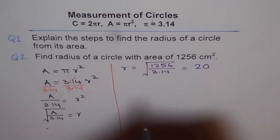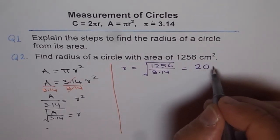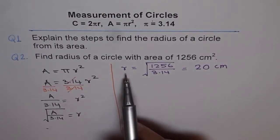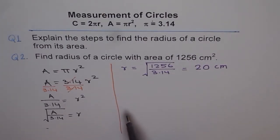So we get 20 and the units are centimeter. So that's how we can get a result that is radius from the area. So that's our answer.